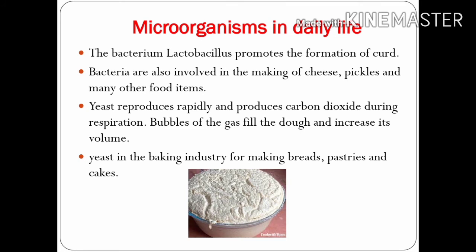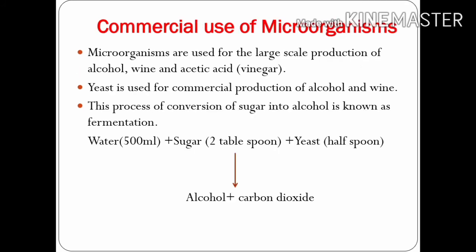You may have observed that your mother uses curd in the batter of idli and dhokla. Because of the curd, fermentation takes place and they become spongy. The base of pizza, breads, pastries, and cakes is spongy just because of yeast. Microorganisms are used for the large-scale production of alcohol, wine, and acetic acid (also known as vinegar). Yeast is used for commercial production of alcohol and wine, and is grown on natural sugars present in grains like barley, wheat, rice, and crushed fruit juices.